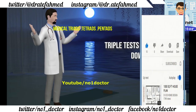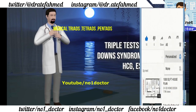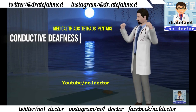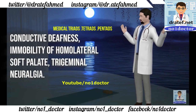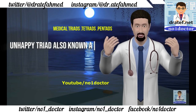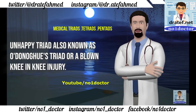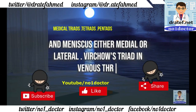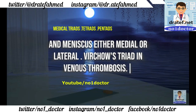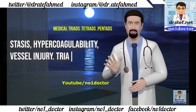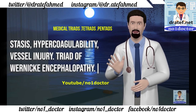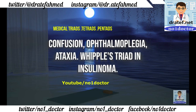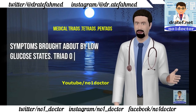Triple test for diagnosis of Down syndrome: estimation of HCG, estriol, and AFP. Trotter's triad in nasopharyngeal carcinoma: conductive deafness, immobility of homolateral soft palate, trigeminal neuralgia. Unhappy triad — also known as O'Donoghue's triad or a blown knee — injury to the anterior cruciate ligament, medial collateral ligament, and meniscus (either medial or lateral). Virchow's triad in venous thrombosis: stasis, hypercoagulability, vessel injury.